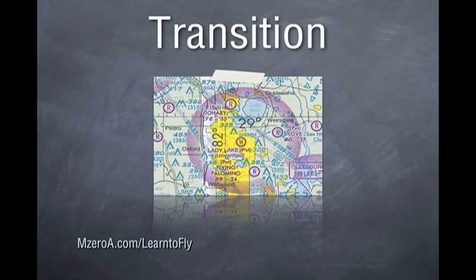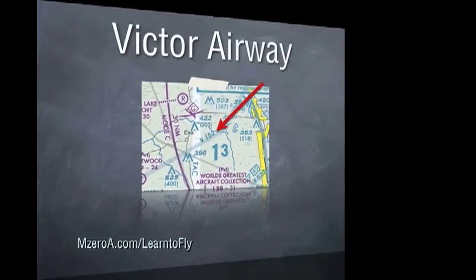Next is a transition area. This is the shaded magenta area surrounding some airports, allowing Class Echo airspace to start at 700 feet.